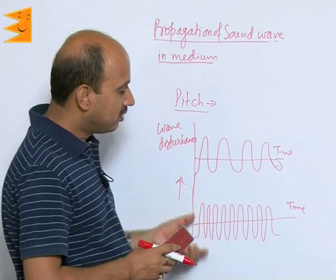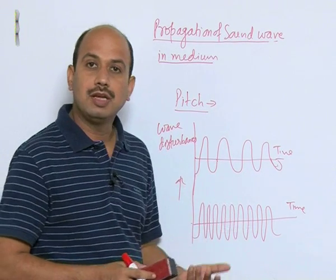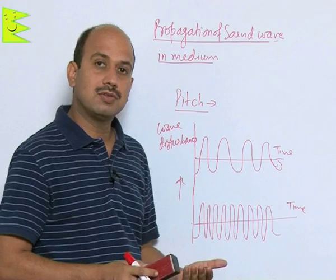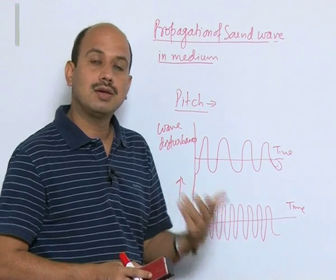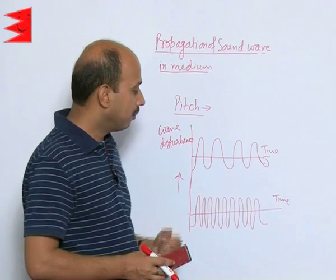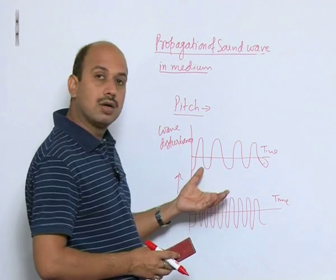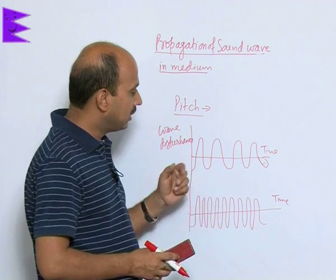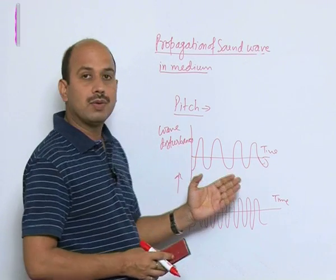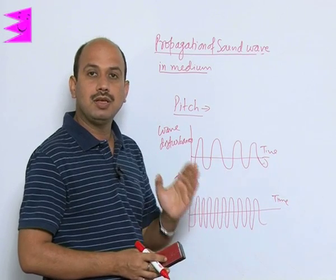This wave disturbance has got more frequency. It means more number of wave disturbances are produced in a given time, per unit time. This has got higher frequency, that means higher pitch, and this has got low frequency, representing low pitch.